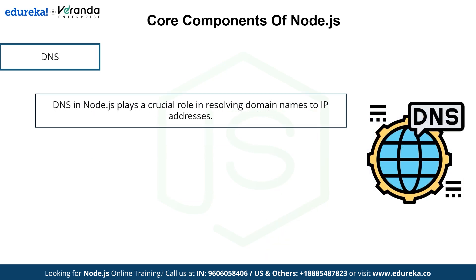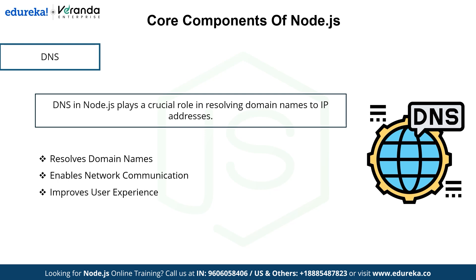The next component is DNS. DNS in Node.js plays a crucial role in resolving domain names to IP addresses. It resolves domain names by converting human-readable domain names into machine-readable IP addresses, enables network communication, and improves user experience by ensuring websites and services are accessible through domain names. It also supports load balancing by distributing traffic across multiple servers based on domain names, and enhances security by implementing measures like DNS-based authentication and authorization.